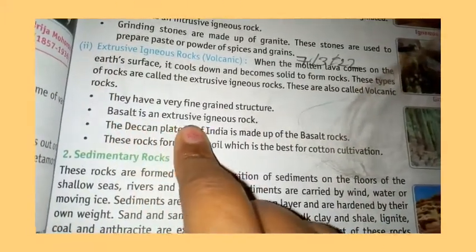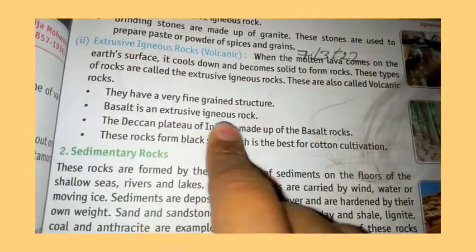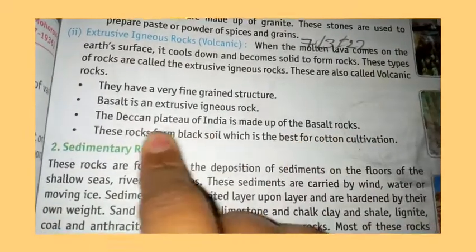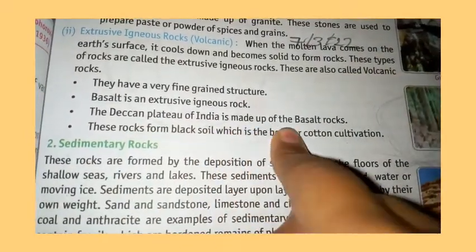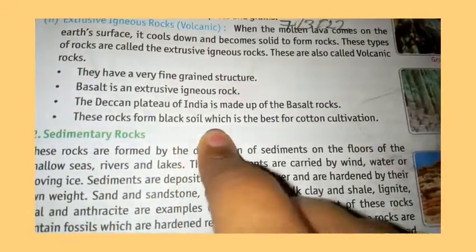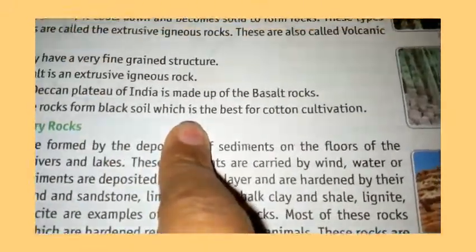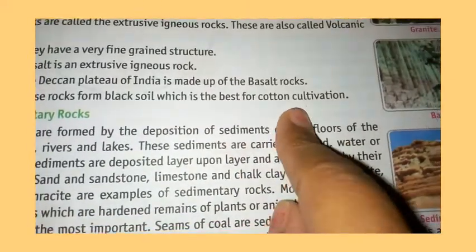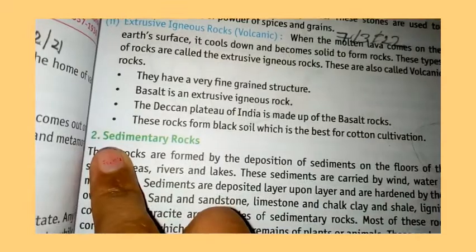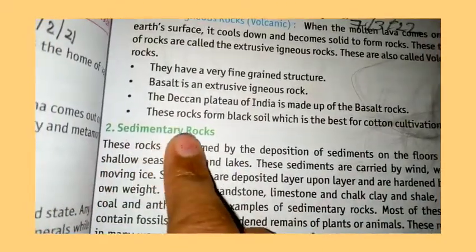Basalt is the extrusive igneous rock. An example is the Deccan Plateau of India, which is made up of basalt rock. From this rock, black soil is formed. This rock is the best for cotton cultivation.